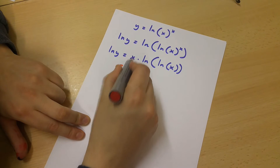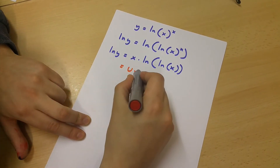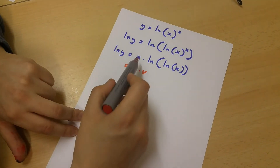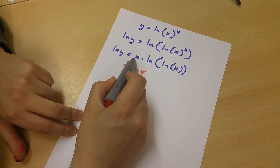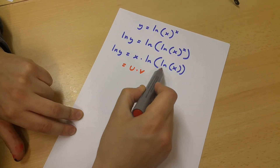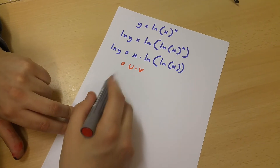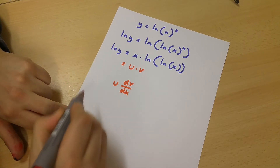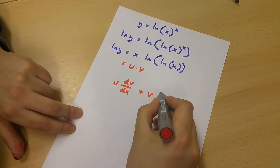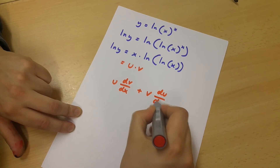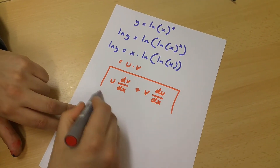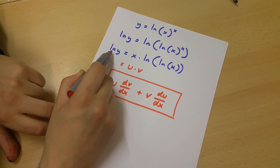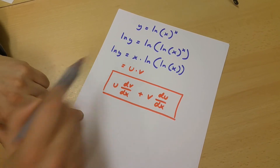We can say that u is a function of x and that v is a function of x. The derivative of this side of the equation is going to be equal to u multiplied by dv over dx, plus v multiplied by du over dx. To differentiate the left side of this equation, we are going to use implicit differentiation.